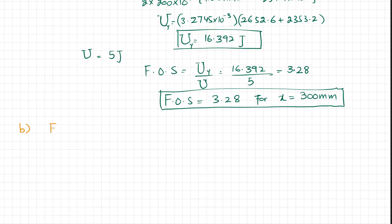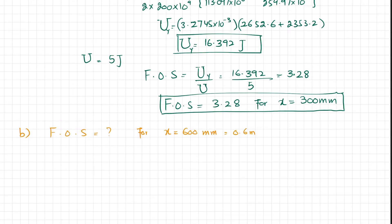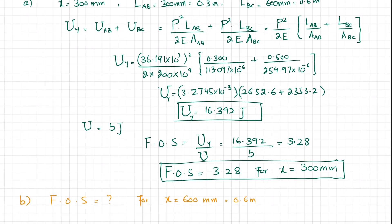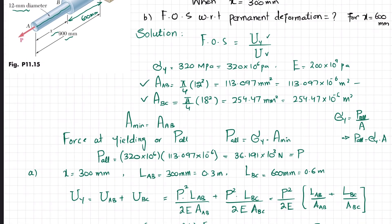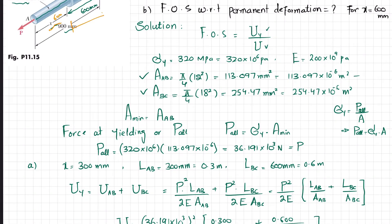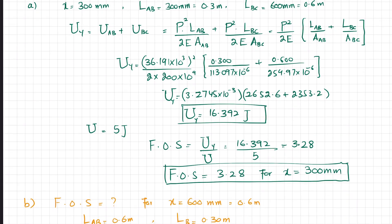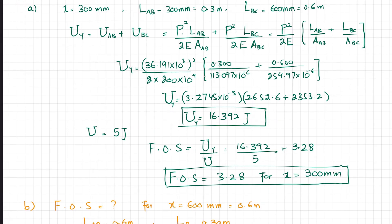Now moving to Part B: find the factor of safety for x equal to 600 millimeters, which is 0.6 meters. When x equals 600, the length of AB becomes 0.6 meters, while the length of BC equals 900 minus 600 equals 300 millimeters, or 0.30 meters. We use the same formula.